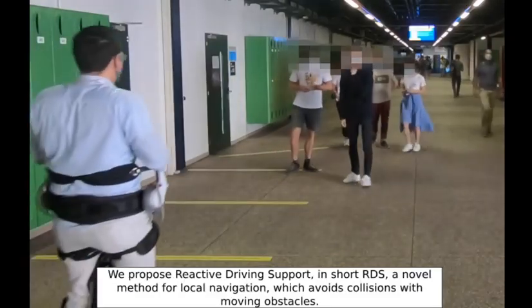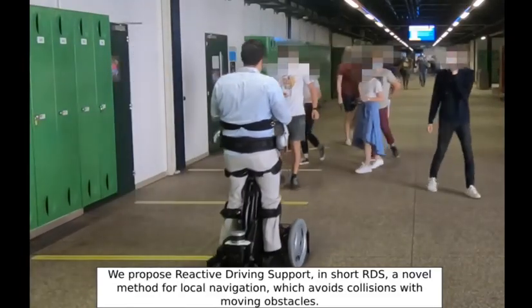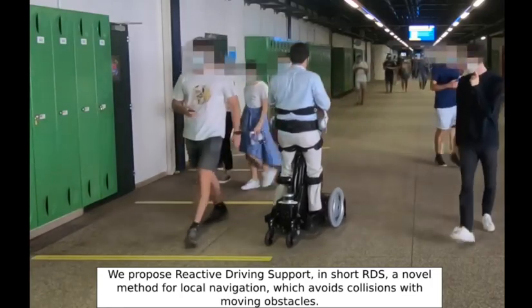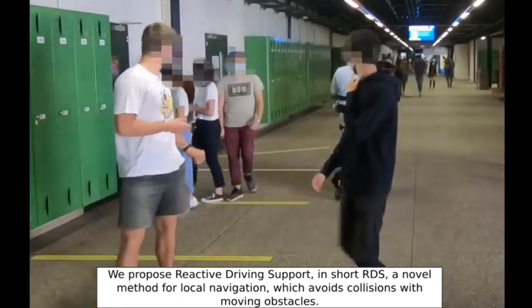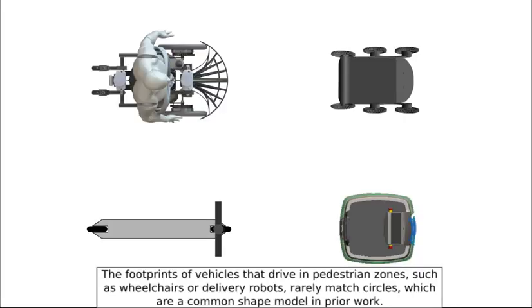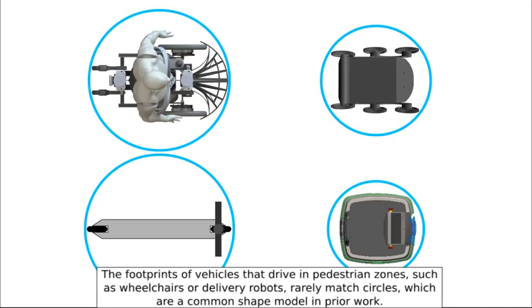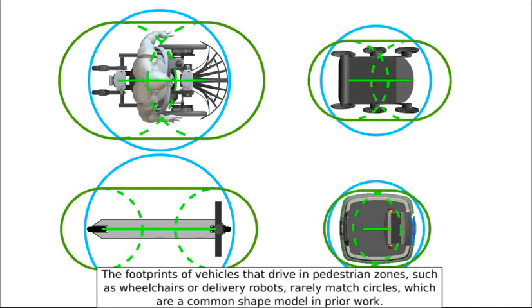We propose reactive driving support, in short RDS, a novel method for local navigation which avoids collisions with moving obstacles. The footprints of vehicles that drive in pedestrian zones, such as wheelchairs or delivery robots, rarely match circles, which are a common shape model in prior work.